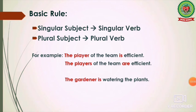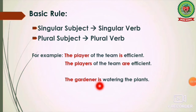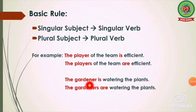Another example: 'The gardener is watering the plants.' Again, the subject is 'the gardener,' which is singular, so we use the singular verb 'is.' In the sentence 'The gardeners are watering the plants,' the subject is plural — 'gardeners' with an S — so we use the verb 'are,' not 'is.'